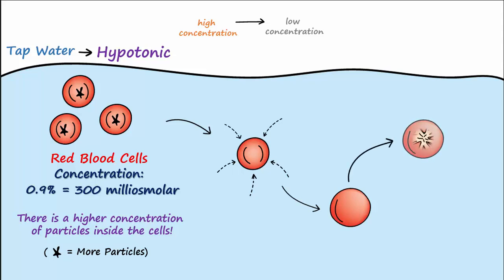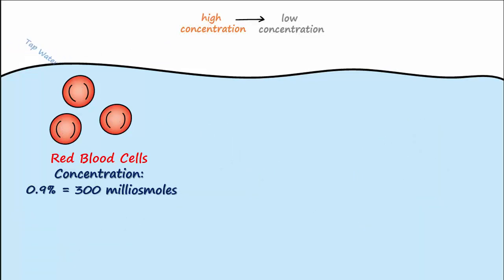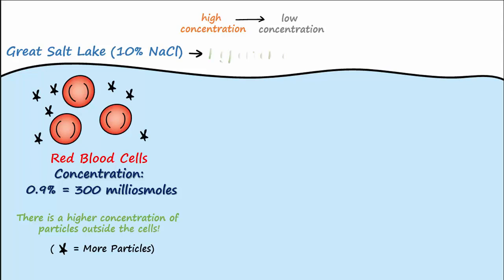This breaking of the cells is called cytolysis — cyto means cell, and lysis means break. Now say instead of tap water, we put red blood cells into a concentrated solution, like that of the Great Salt Lake, which can be 10% or higher. In this case, there is a higher concentration of solute particles outside the cell, so the solution is considered to be hypertonic compared to the solution inside the cell. Now the water would go the opposite direction — the water is in highest concentration in the cell, and lower in the surrounding water, so the water would go from high to low and leave the cell, causing it to shrink, or what's called crenate.